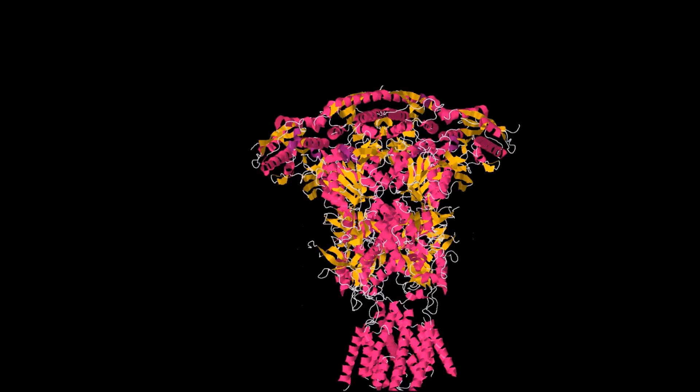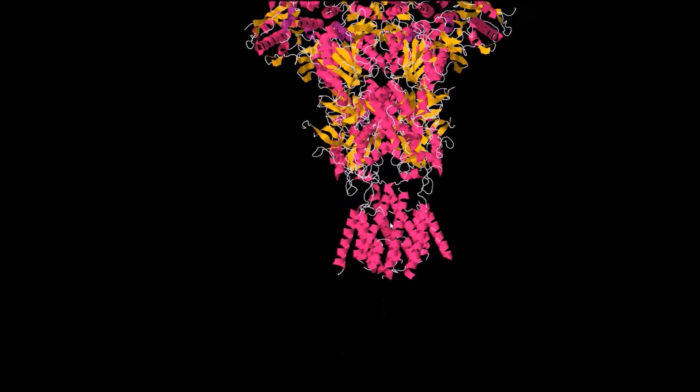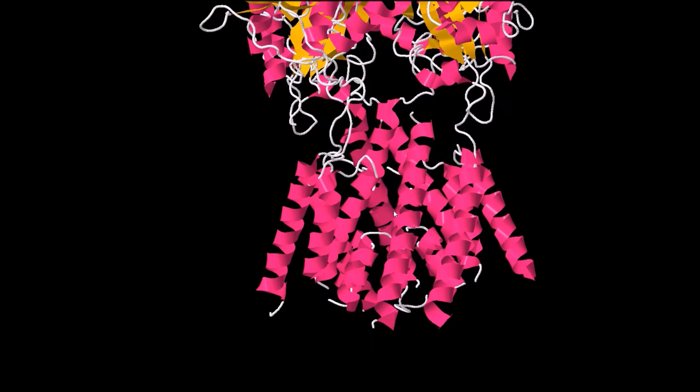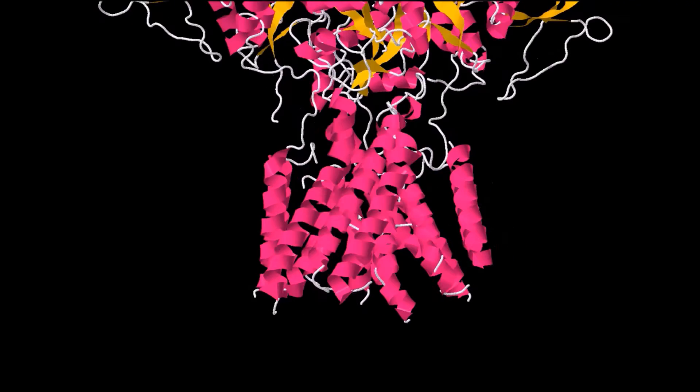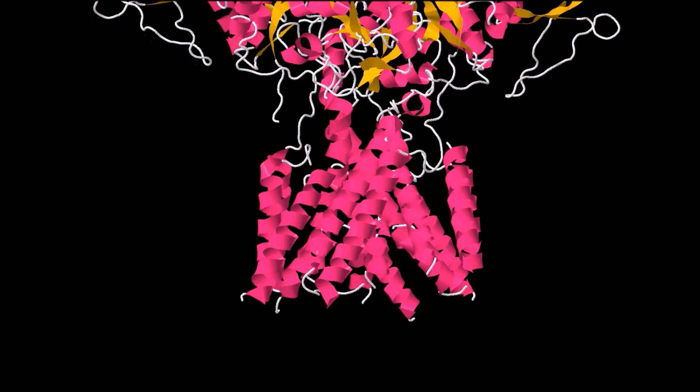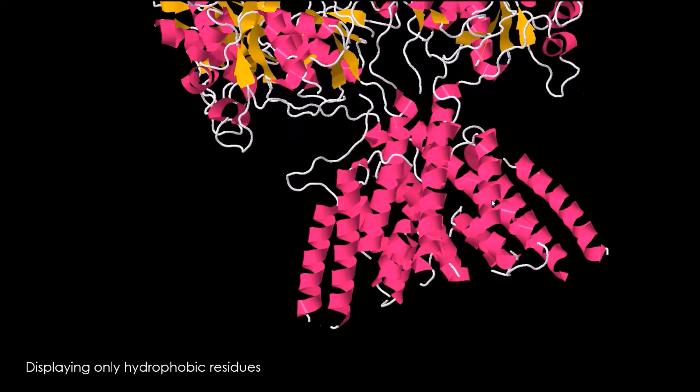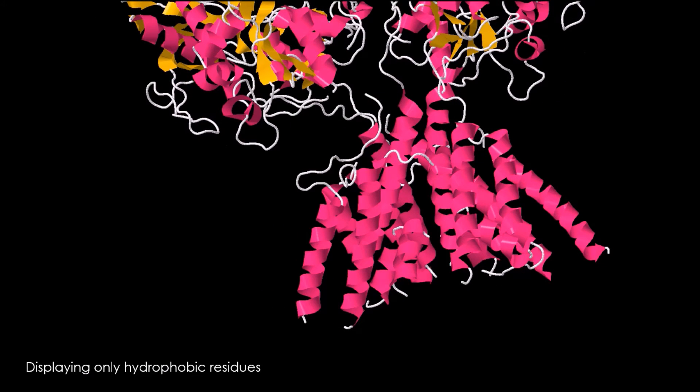The transmembrane domain of the receptor is made up of a series of four alpha helices labeled M1 through 4. Helices M1, 3, and 4 are anchored in the membrane, and thus are primarily constructed of hydrophobic residues, while M2 does not cross the membrane.